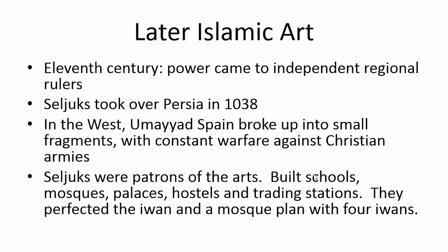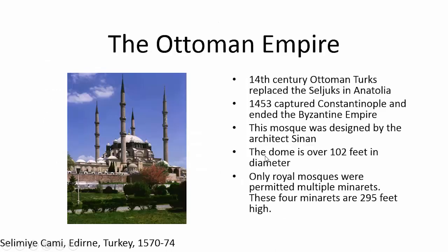The Ottoman Empire came into power in the 14th century, replacing the Seljuks in Anatolia — now Turkey. The Ottoman Empire lasted all the way until 1918. They captured Constantinople in 1453 and ended the Byzantine Empire. We talked about how the Hagia Sophia had become a mosque and is now a museum.